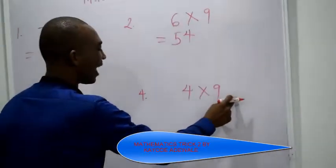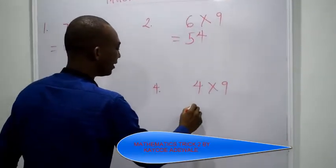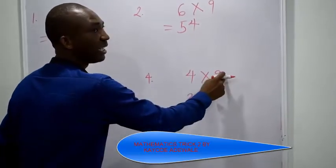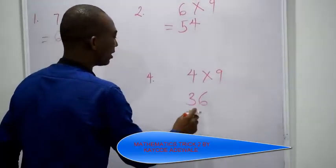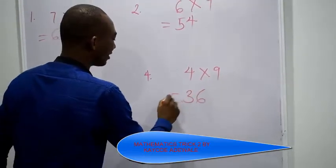Next one, 4 multiplied by 9, take 1 away from 4, that is 3. Difference between 3 and 9, that is 6. 4 multiplied by 9 is going to give you 36.